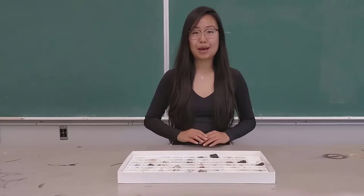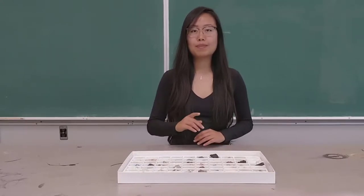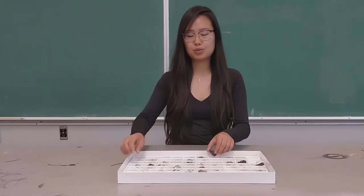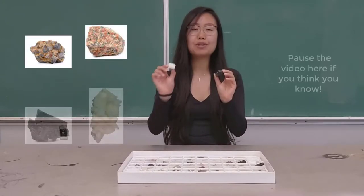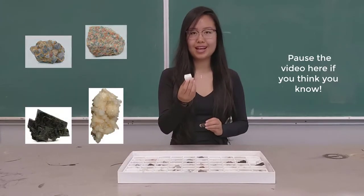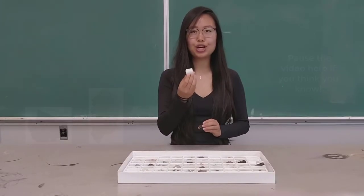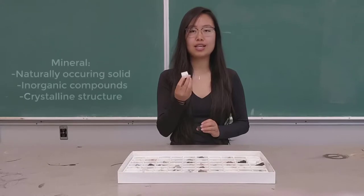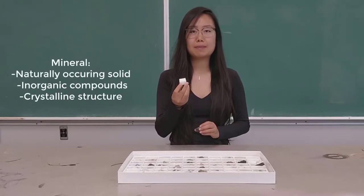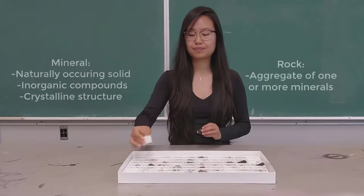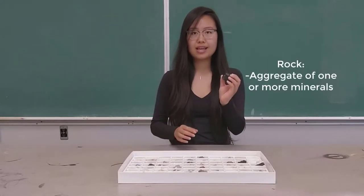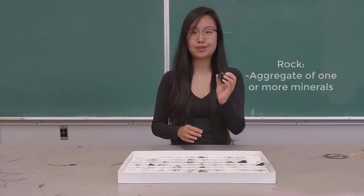Let's take a look at an example together. Before we begin, it's important to know the difference between a rock and a mineral. A mineral is a naturally occurring solid that is made up of inorganic compounds and has a unique crystalline structure. A rock is made up of minerals.